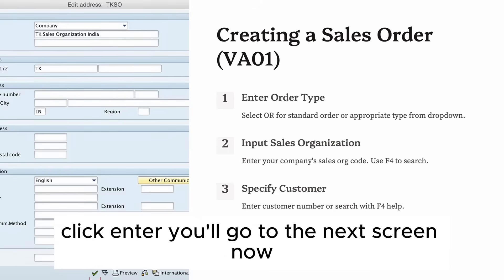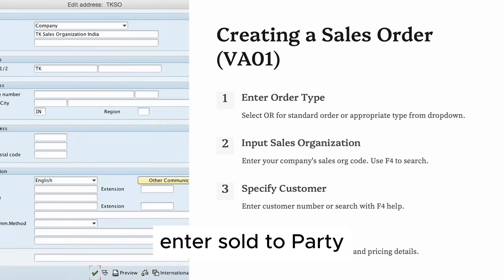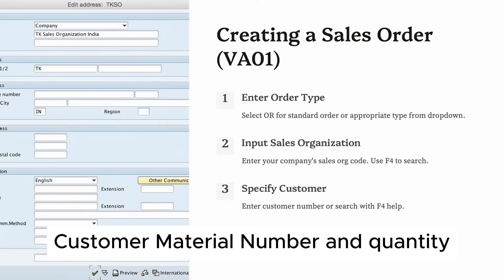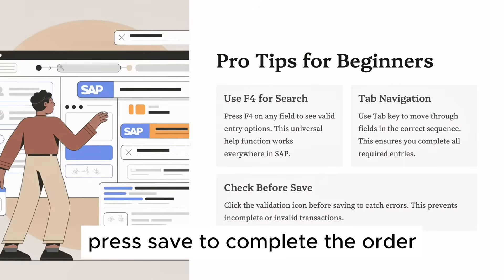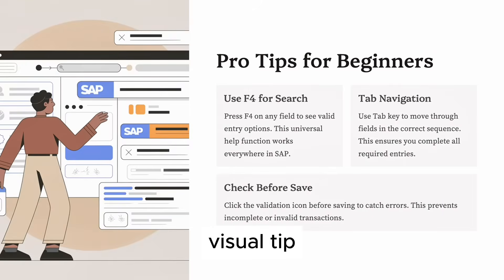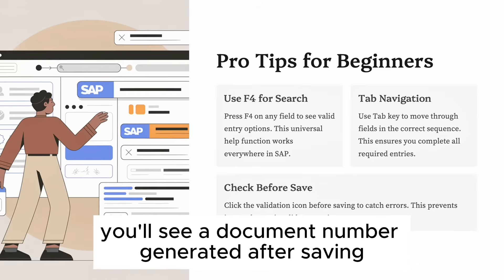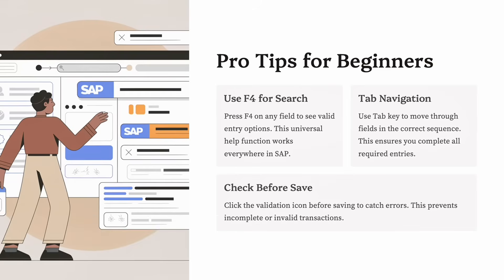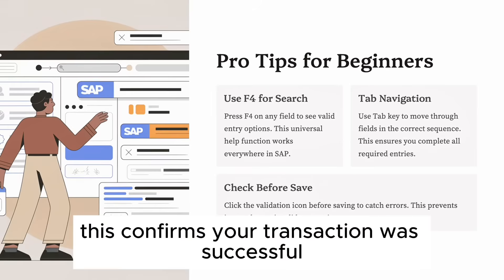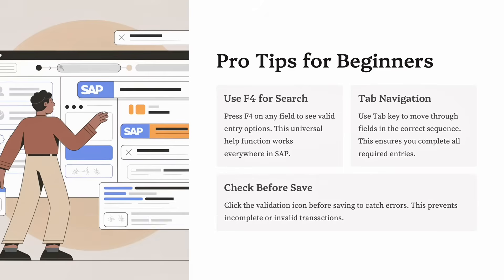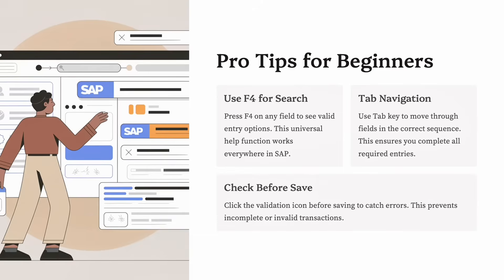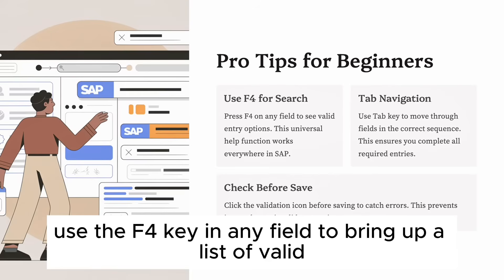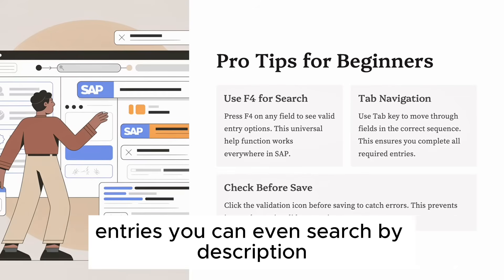Now enter the Sold-to Party (customer), material number, and quantity. Click the check button to validate, then press Save to complete the order. Visual tip: you'll see a document number generated after saving — this confirms your transaction was successful. Pro tip: not sure what to enter? Use the F4 key in any field to bring up a list of valid entries. You can even search by description.